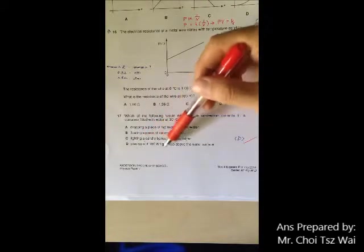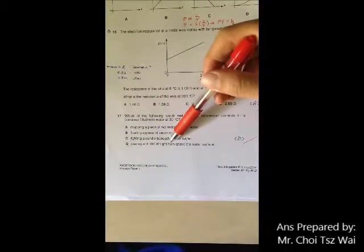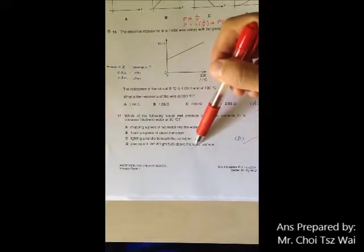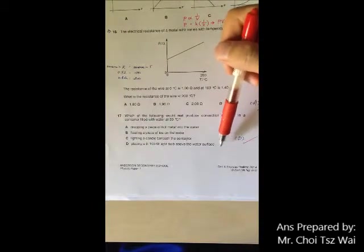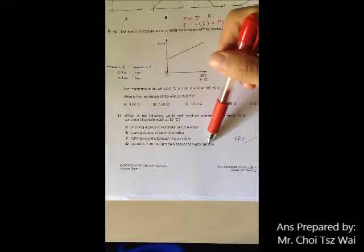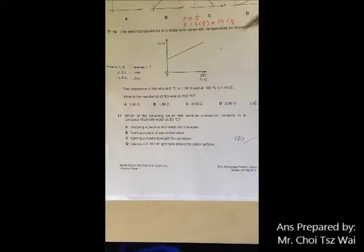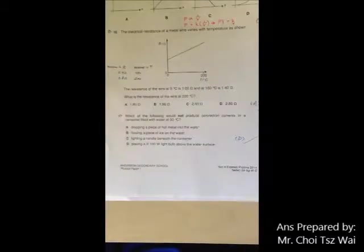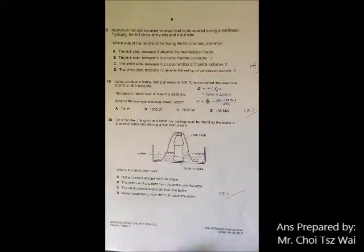But if you put the light bulb, which is the heat source, above the water surface, you are only warming the top layer of the water. And so when the top layer becomes warm, it floats on top, there will be no circulation. So therefore, there will be no convection current.